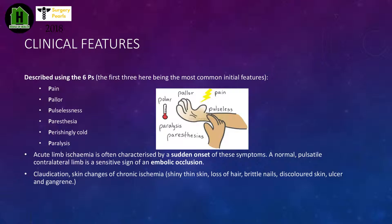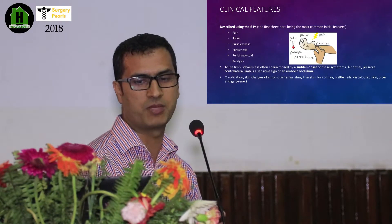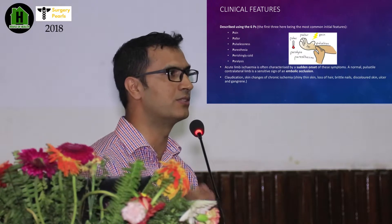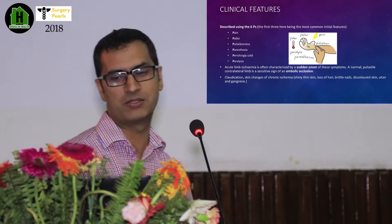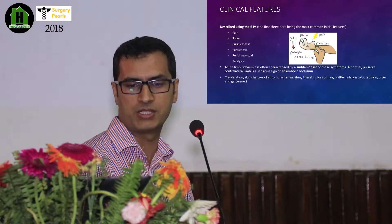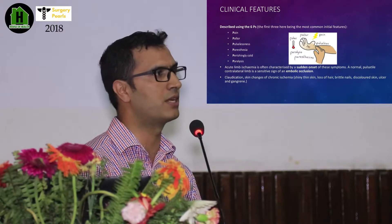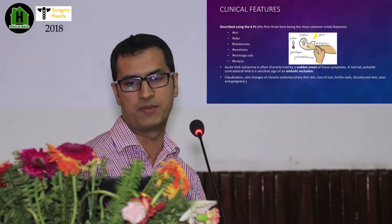The clinical features of critical limb ischemia in an acute setting are the famous six Ps: sudden onset of pain, pallor, pulselessness, paresthesia, paralysis, and coldness. Of all these, pain is the most common feature with which patients present in critical limb ischemia.